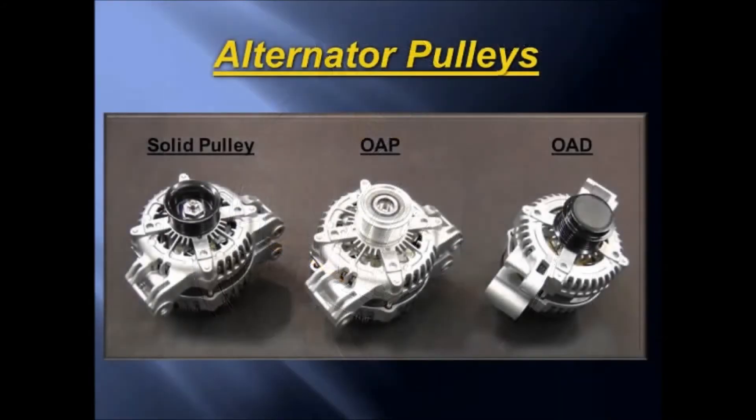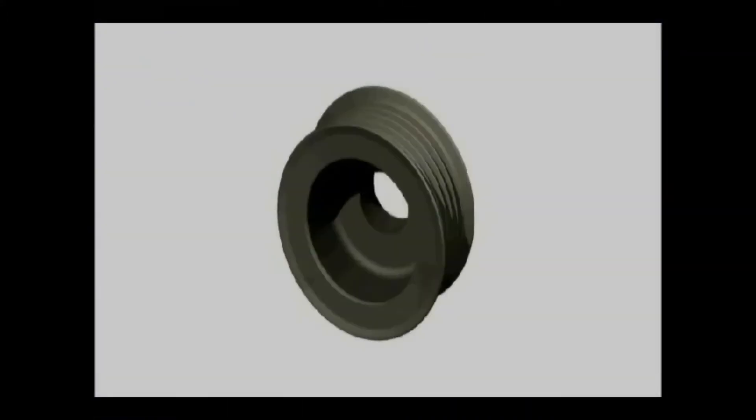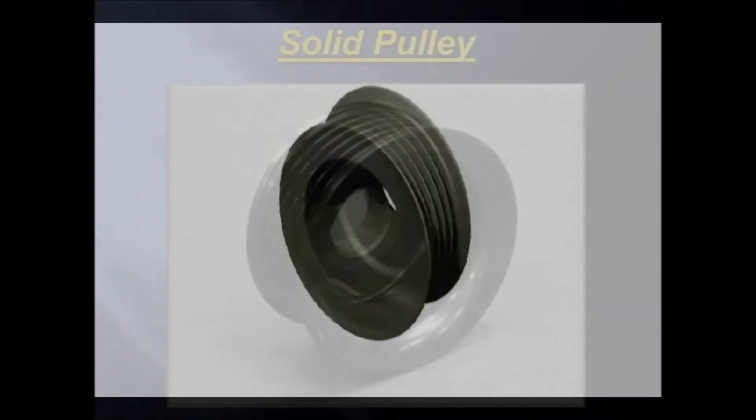Let me take some time to explain the differences for each type of pulley. First, the solid pulley. This is your standard old school serpentine belt alternator pulley. The only function of this pulley is to drive the alternator.